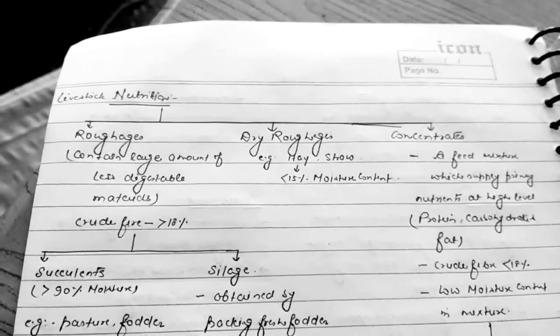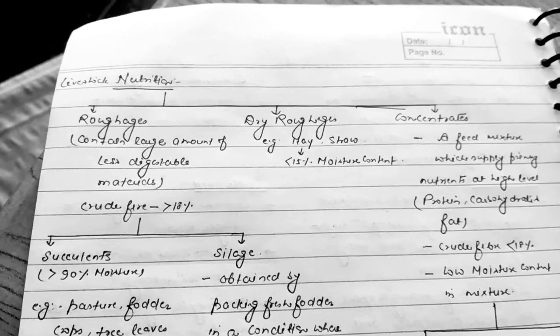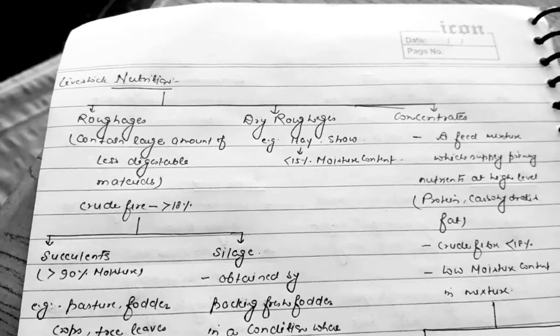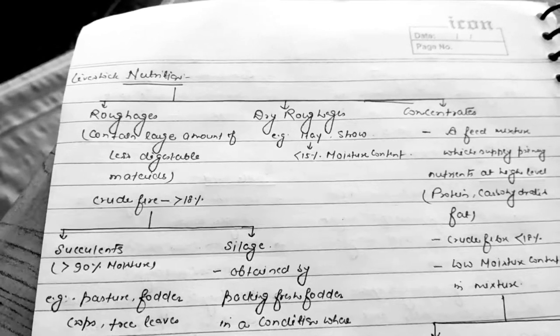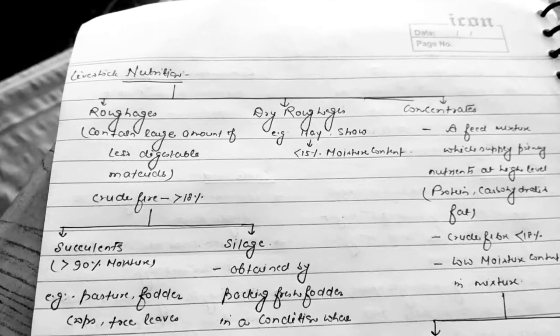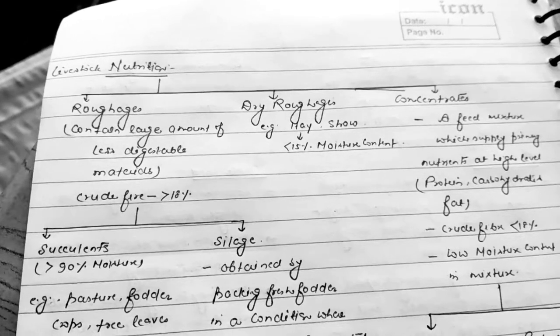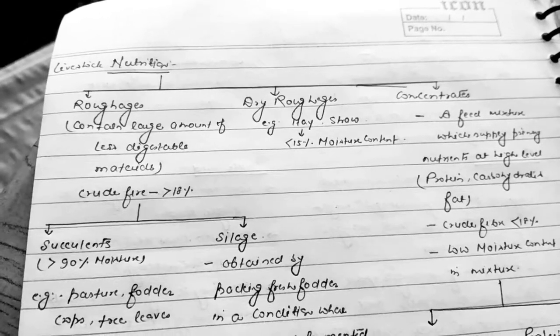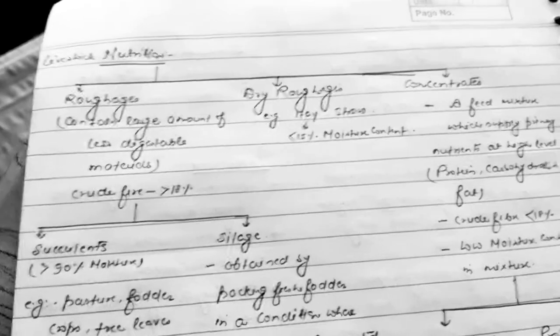Spaces are very important from an examination point of view because in various examinations, the area or space available for cows, heifers, or other animals is asked every time. So you should give proper emphasis on the spaces provided for those animals.